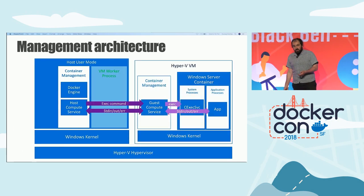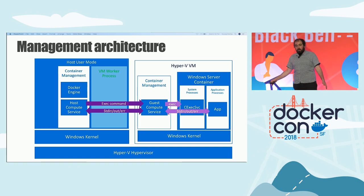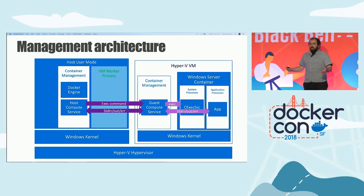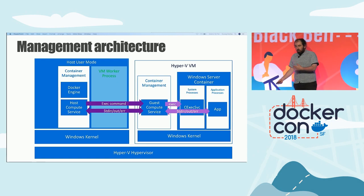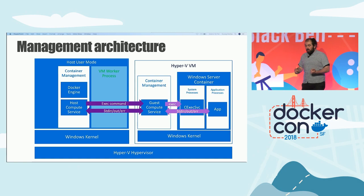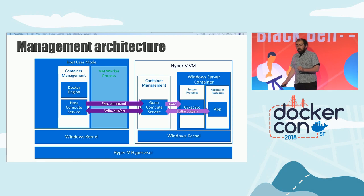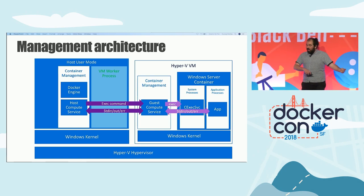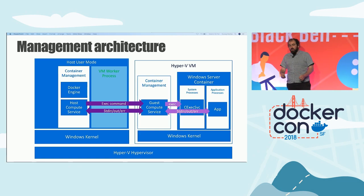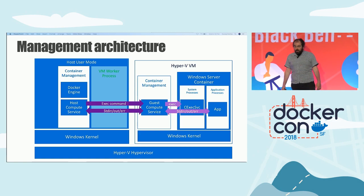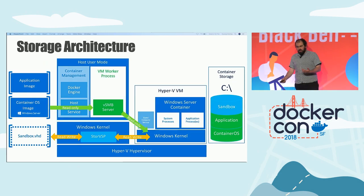The management architecture for Windows Server containers works exactly the same way in Hyper-V isolated containers — almost everything maps directly. All the interactions you do in a Windows Server container work almost entirely the same in a Hyper-V isolated Windows Server container. There are some exceptions to resource constraints, but the management architecture works identically with the exception that we now have a guest compute service that talks to the host compute service, ferrying the C exec commands to the inside of the container. For storage, Hyper-V is powerful and fast but not very flexible — it provides the option of mounting VHDs to a VM, and that's about it.